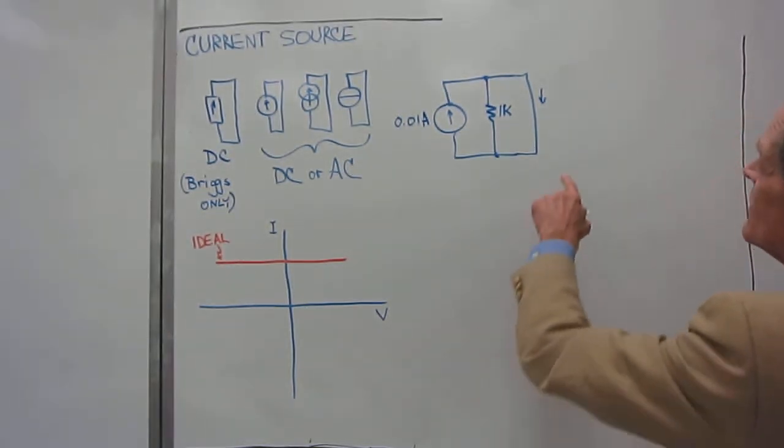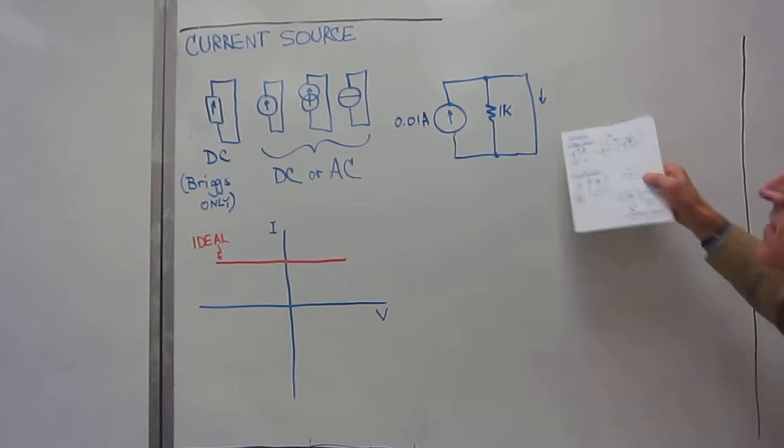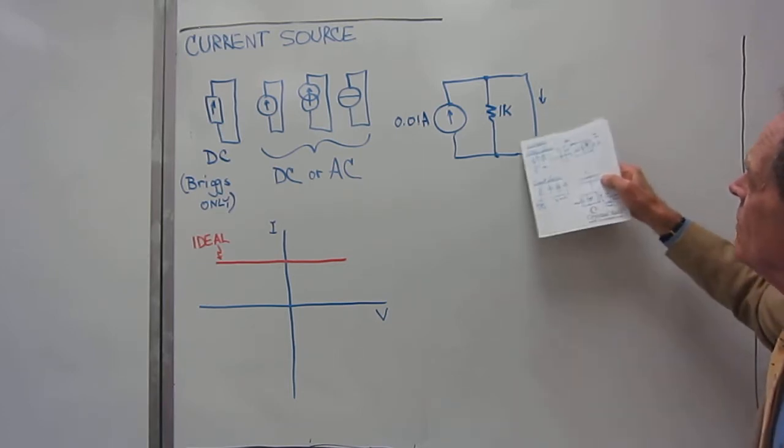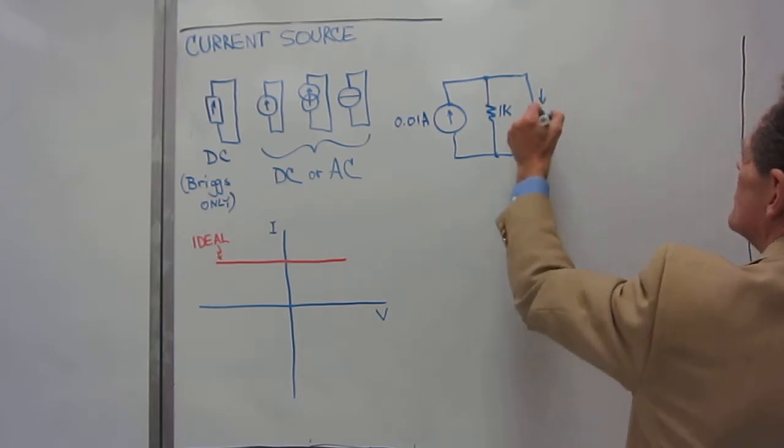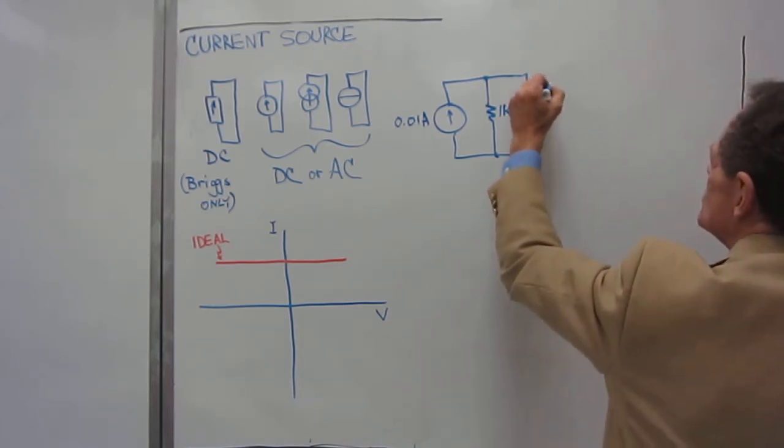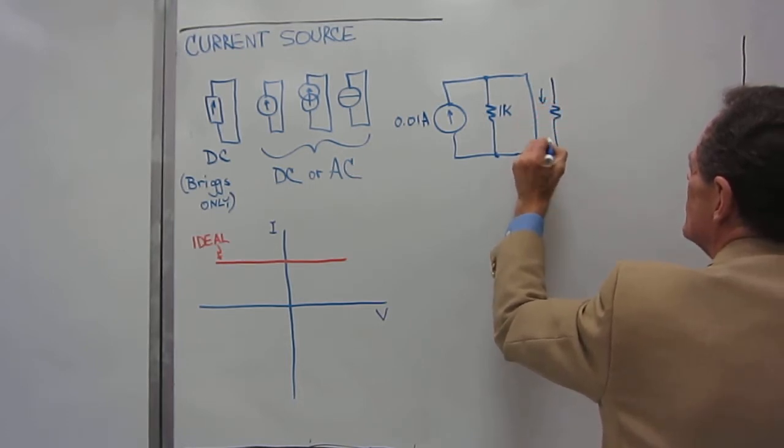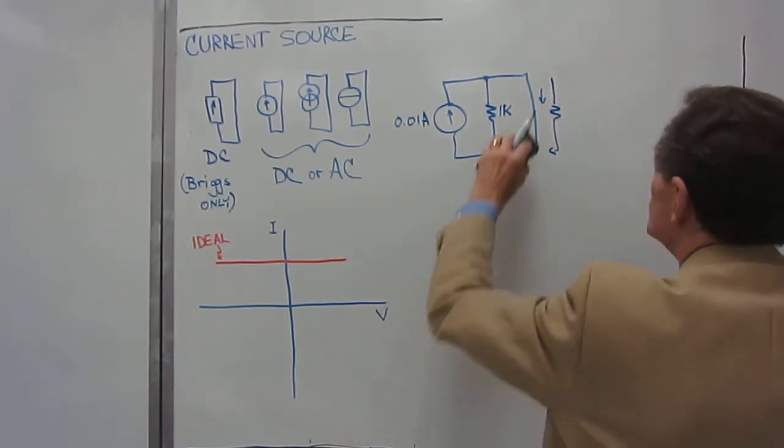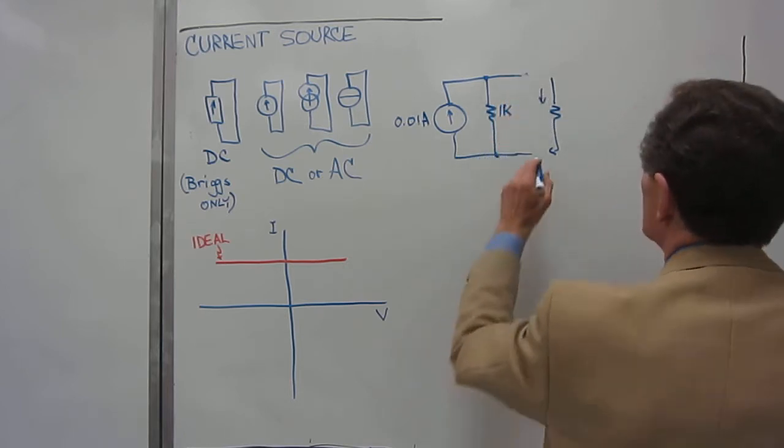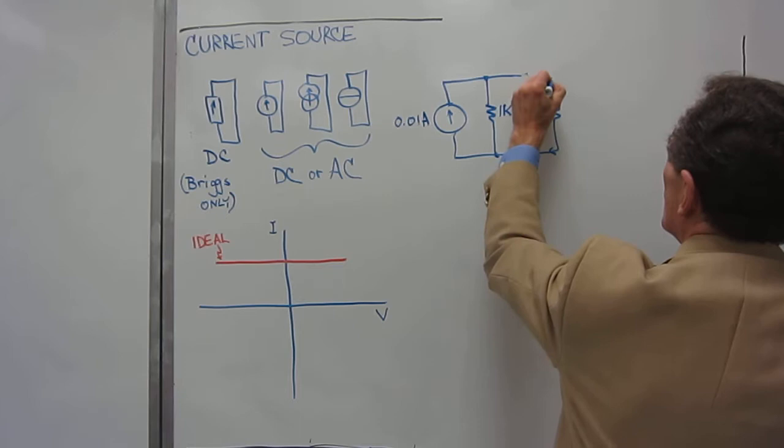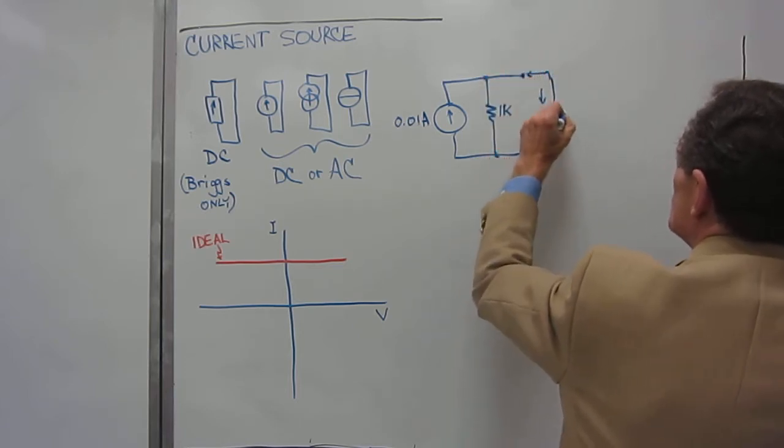So, what happens is that when we have a 10 ohm resistor here, what would be the current? I guess I'll just show it as a 10 ohm resistor. Okay, that's going to be confusing. I'm going to erase this line right here, and I'm going to replace it with a 10 ohm resistor at this point.